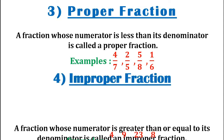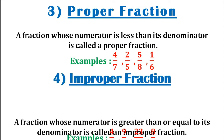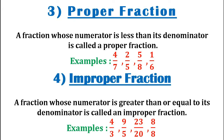The fourth type of fraction is the improper fraction. A fraction whose numerator is greater than or equal to its denominator is called an improper fraction. Let us look at the examples given below. The first three fractions, that is 4 by 3, 9 by 5, and 23 by 20, are examples of improper fractions because their numerators are greater than their denominators. The fourth fraction, that is 8 by 8, is also an example of improper fraction because its numerator is equal to its denominator.